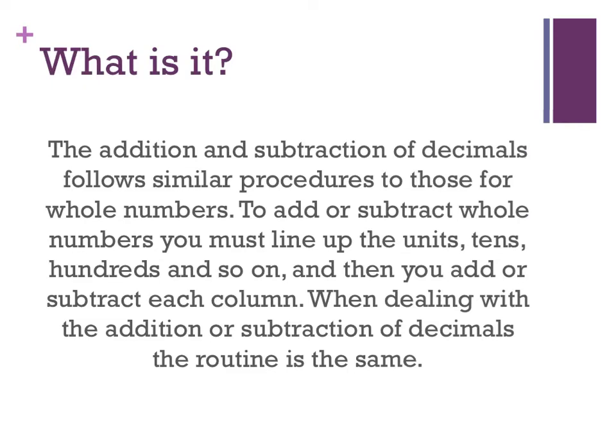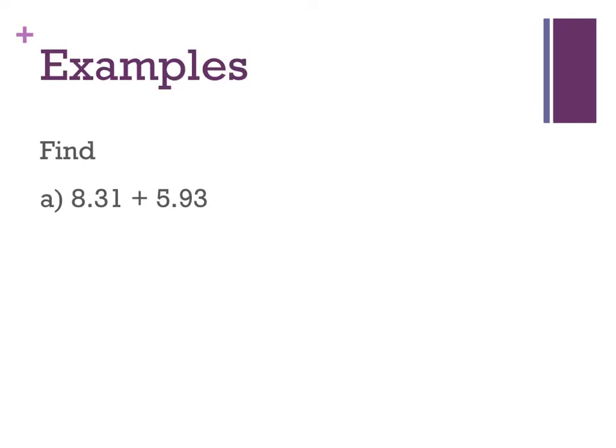So let's have a look at a few examples. 8.31 plus 5.93. Now the thing you'll notice about decimals is they have this decimal point. The main thing to note about the decimal point is you have to put decimal points under decimal points. You must make sure you line them up. So the first thing that I like to do is I draw my two decimal points here. And then I draw my line underneath. And then there's 8 is there, 0.31.